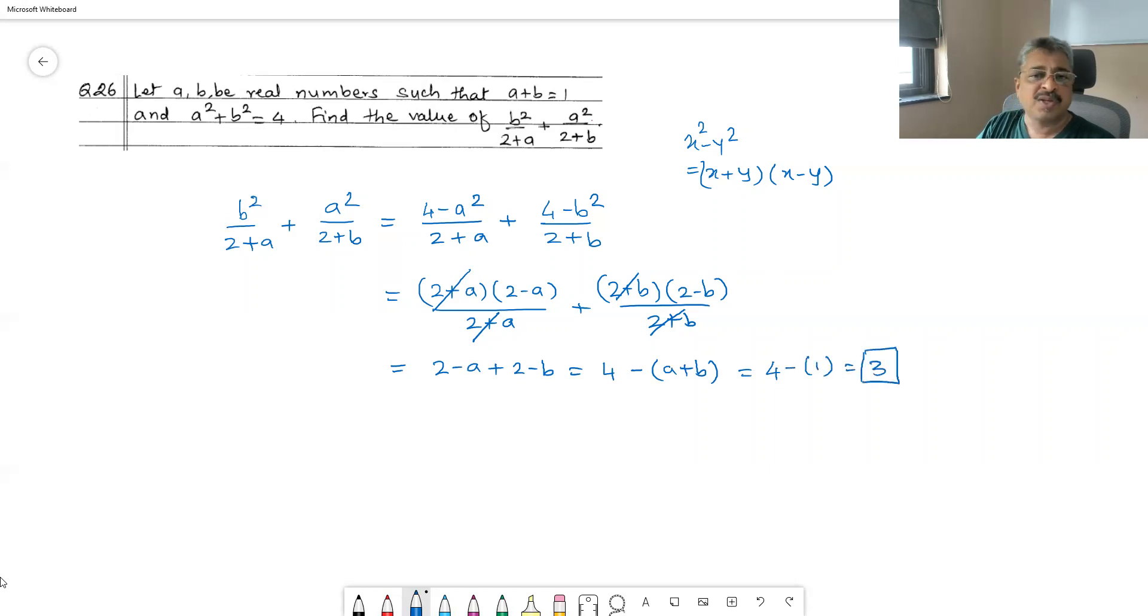So 3 is the answer. However, using quadratic equations, what we will have to do is a equals 1 minus b. Therefore, put this value of a into this equation: we get 1 minus b bracket squared plus b squared equals 4. And now it is a quadratic in b which we should be able to solve.